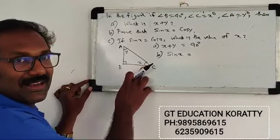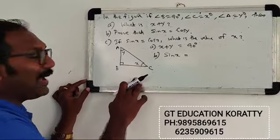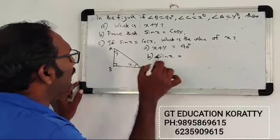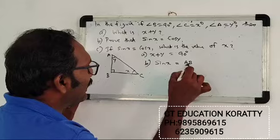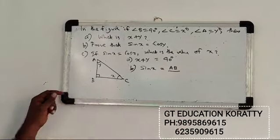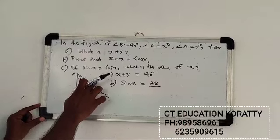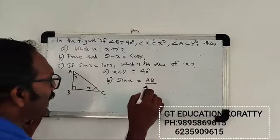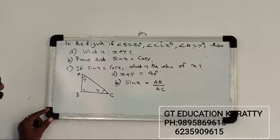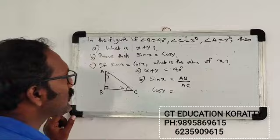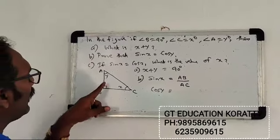Sin theta is equal to opposite side by hypotenuse. So sin x equals the opposite side over the hypotenuse. Now for the triangle, the adjacent side corresponds to angle y.